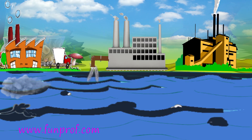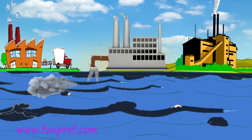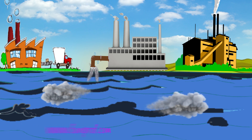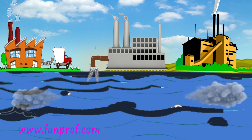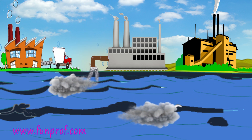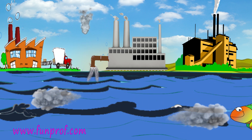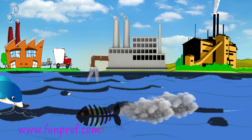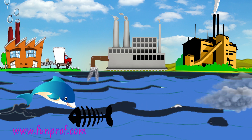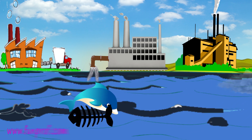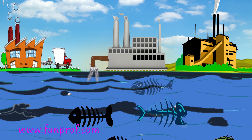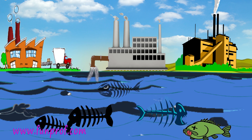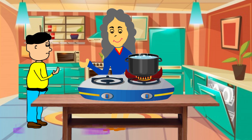In rivers and oceans, factories throw hot water. Because of this, eggs and larvae die. So there are fewer fish in oceans and seas.